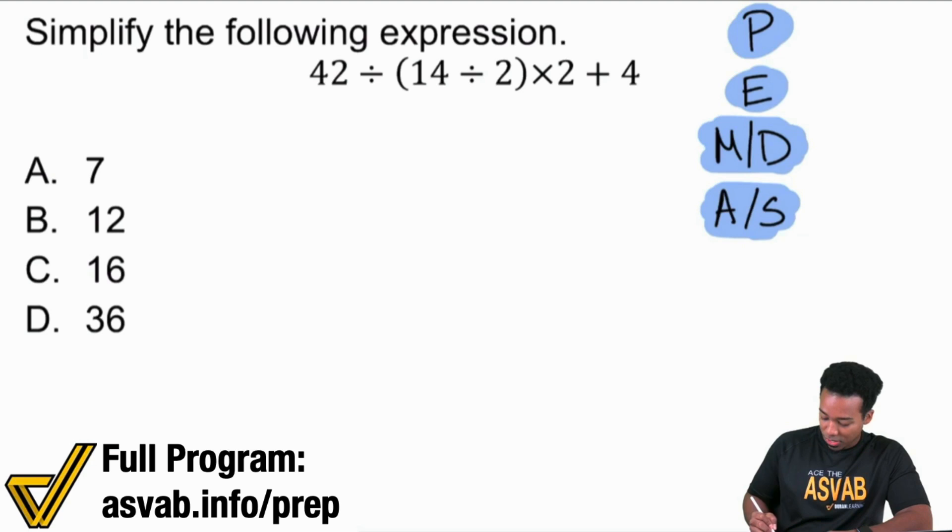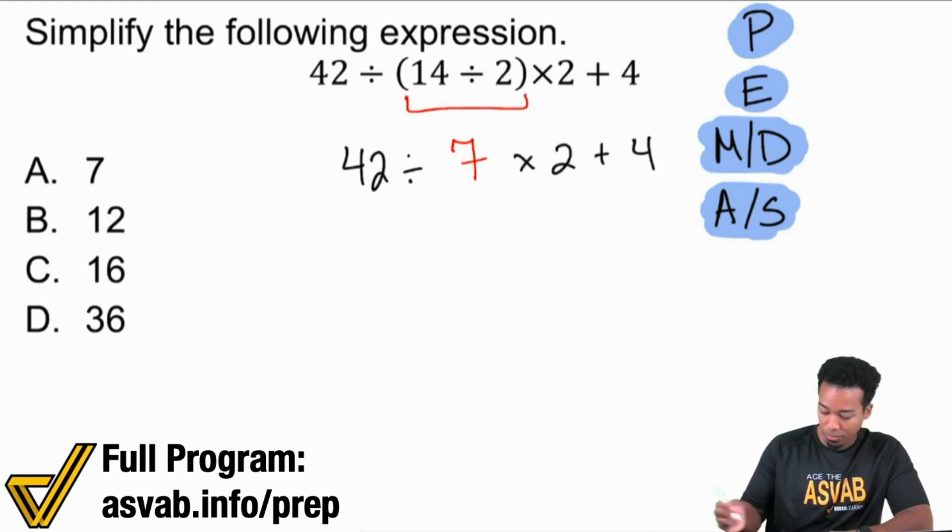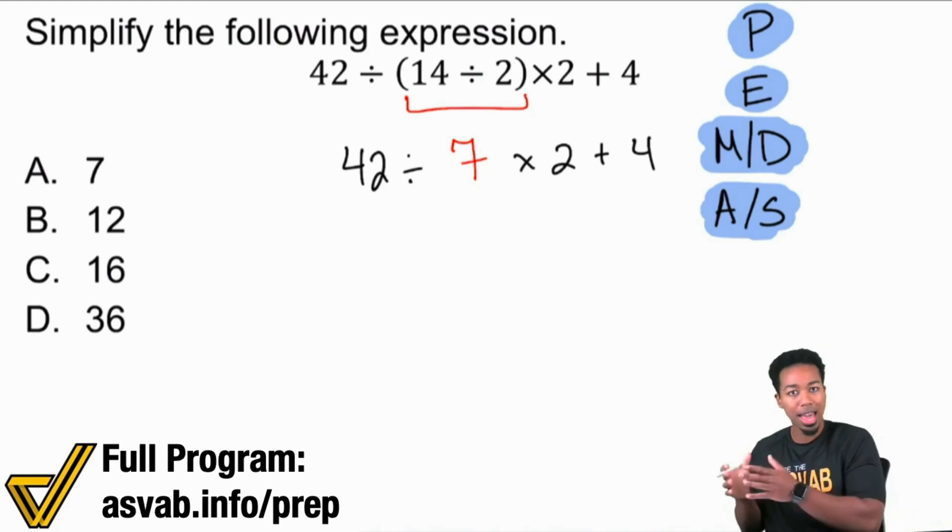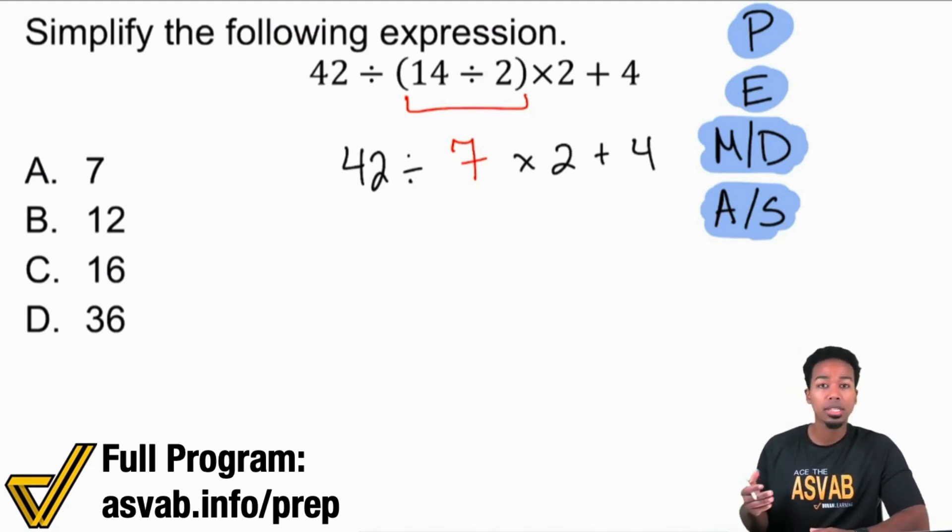So obviously, parentheses must come first. So that's right here. 14 divided by 2, we'll take care of that. That's going to be 7. But let's go ahead and rewrite everything that we see here. We have 42 divided by whatever that was going to be, which is 7. Then we have the multiplier of 2 and adding 4. Looking at the math before you actually perform it, super important. It's going to give you a lot of room to not make mistakes. So we're taking a look here.